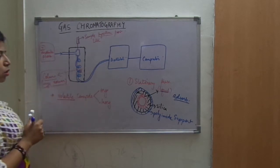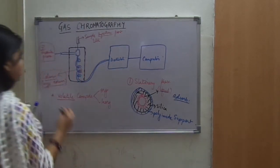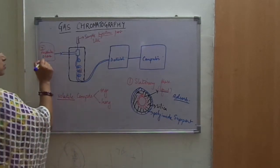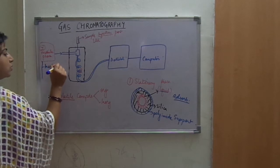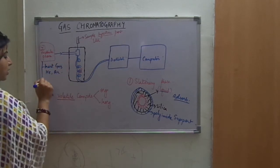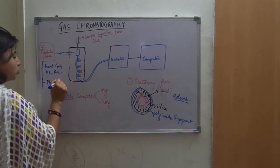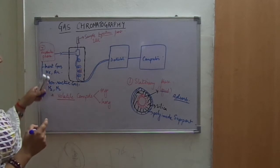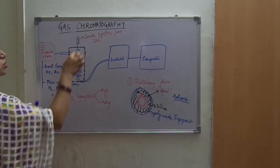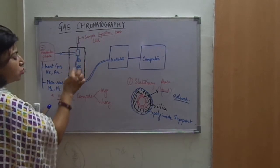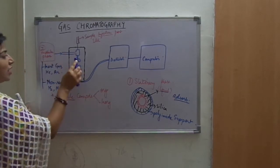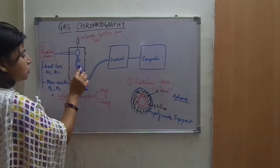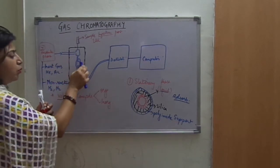Coming to the mobile phase — this was the column and inside the column the stationary phase is present. The mobile phase can either be an inert gas like helium or argon, or it can be a non-reactive gas like hydrogen or nitrogen. The purpose of the mobile phase is just to push the sample components through the column. Its function is not to react with the sample components or the column components, but just to push the sample components further through the column.